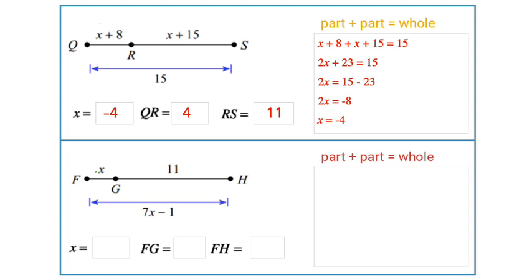For the bottom example, we have x + 11, so that part FG plus the other part GH is equal to 7x - 1. Once again, pause the video, solve this equation, and answer those lengths on the bottom. Then come on back and we'll check.